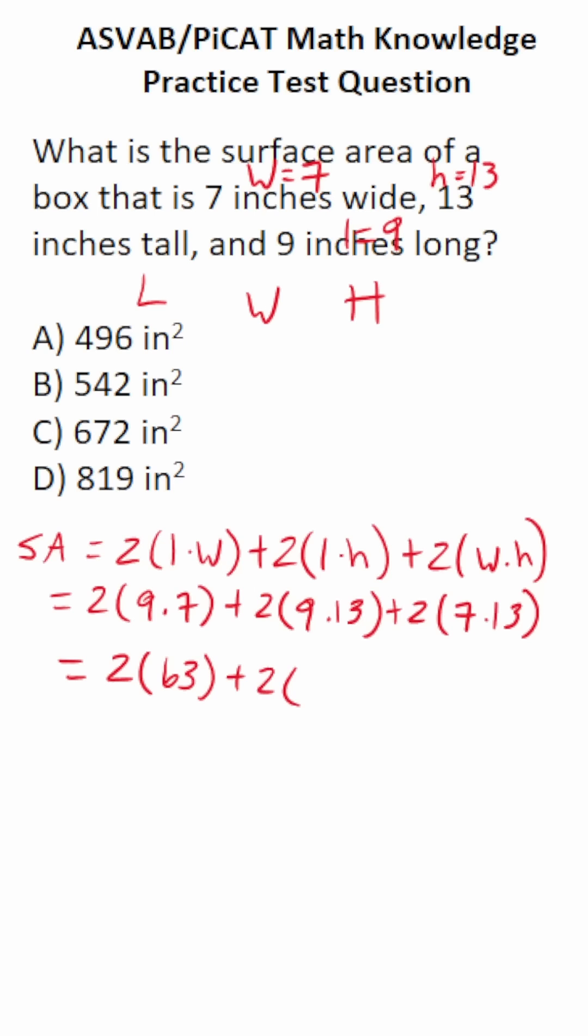Plus 2 times 9 times 13 is something I'll work off to the side very quickly. 9 times 3 is 27, so bring down a 7, carry a 2. 1 times 9 is 9, plus 2 is going to be 11. So this is 117.